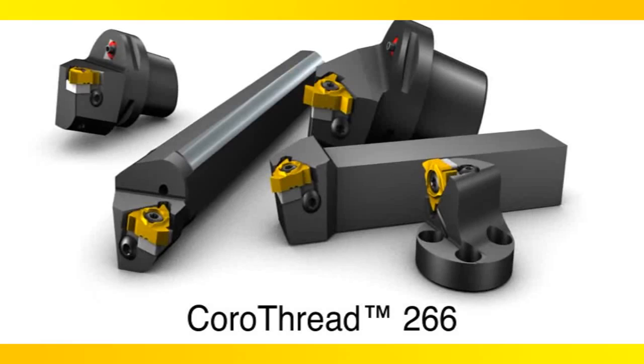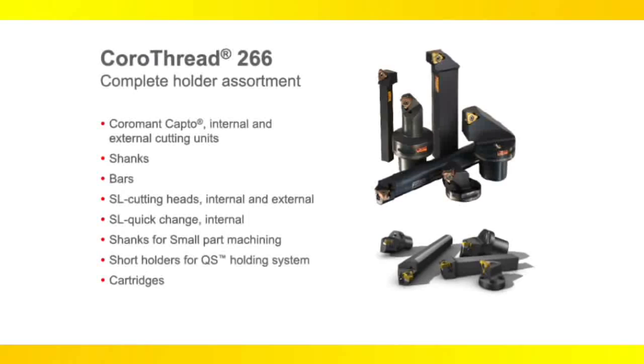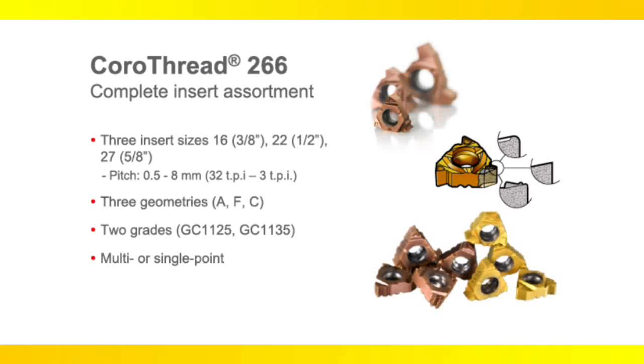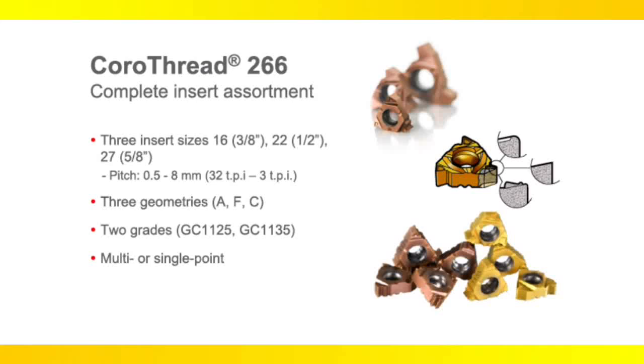Sandvik Coromant offers many different tool holder solutions for CoroThread 266. CoroThread is available in three insert sizes: three-eighths, half-inch, and five-eighths. Pitch ranges from 32 down to three threads per inch, three geometries, two grades, and multi-point or single-point inserts.